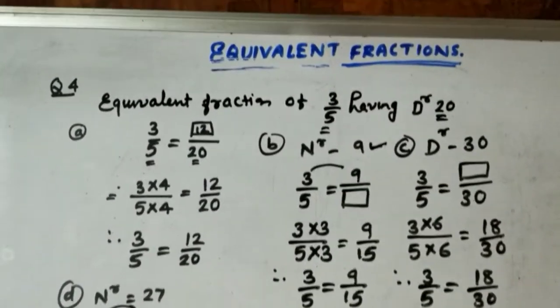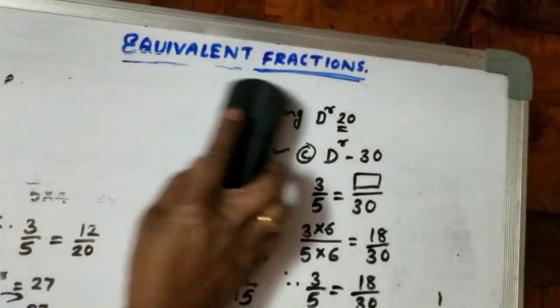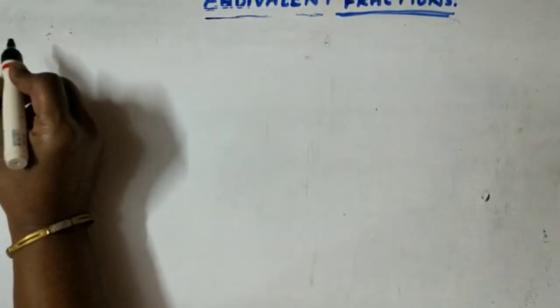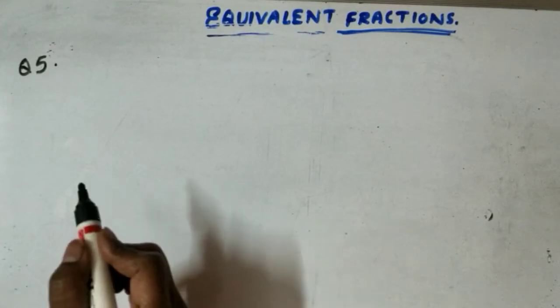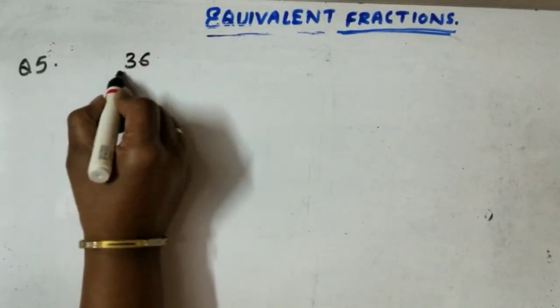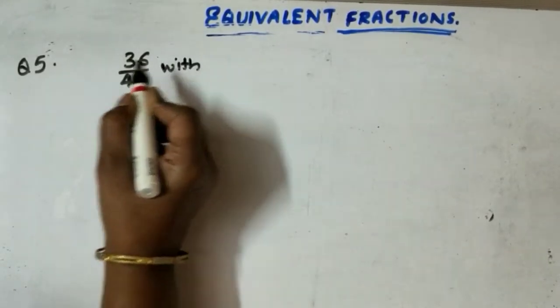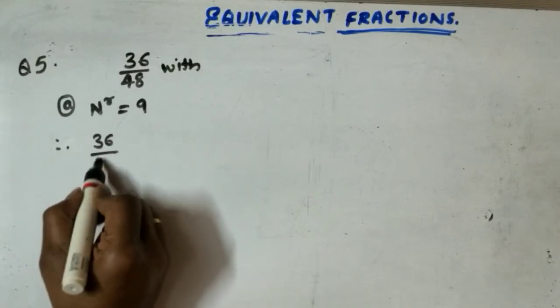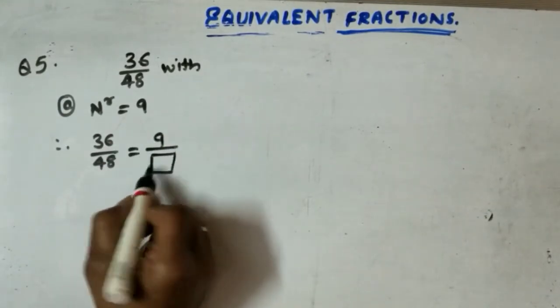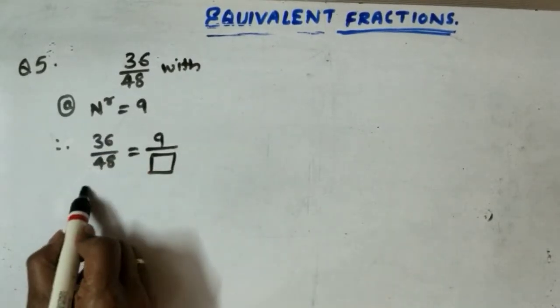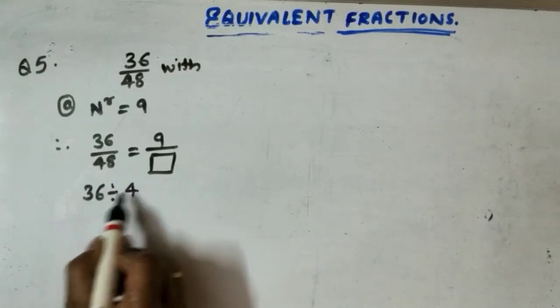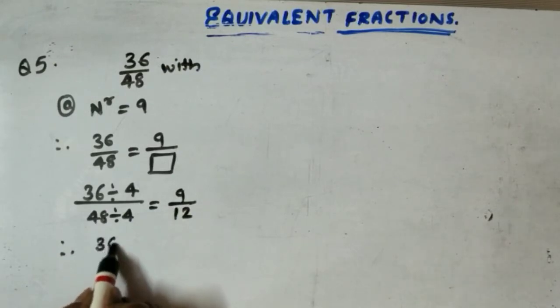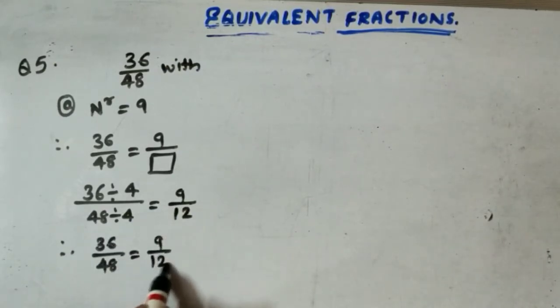The same way, we are having next question number 5. The question is find the equivalent fraction of 36 by 48 with numerator 9. Same manner, same question. Therefore write the fraction 36 by 48. Here we want numerator 9, we have to find the denominator. See the relation between 36 and 9. We know that 36 divided by how much is 9? 4. So 48 divided by 4, so 9 by 12. Therefore, 36 by 48 is equal to 9 by 12.